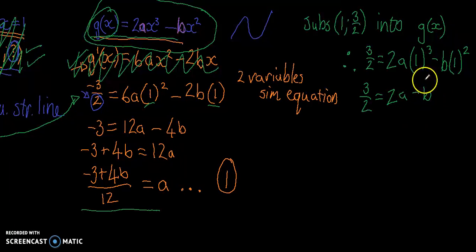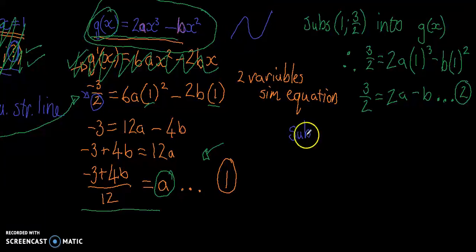I'm going to make b the subject of the formula because that would be the easiest, but now that I'm looking at it, I don't really need to because a is already the subject of the formula there. So I could say this is equation number 2, and let's just change color again so you can see I've got different thoughts going on.